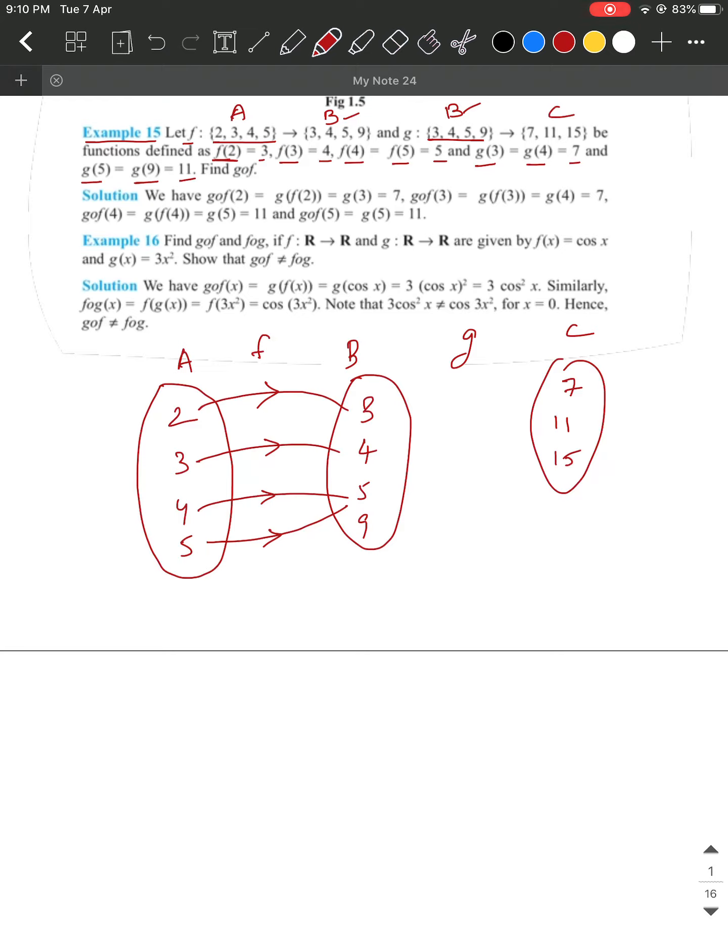Similarly, G is a function defined from B to C. G of 3 and G of 4 are 7. G of 5 and G of 9 are 11.